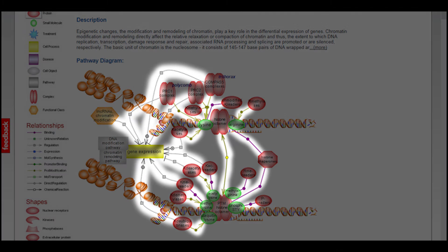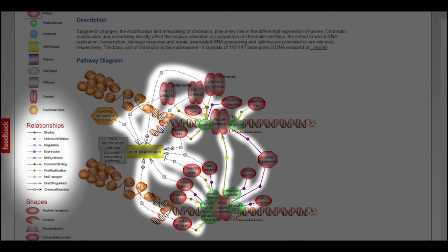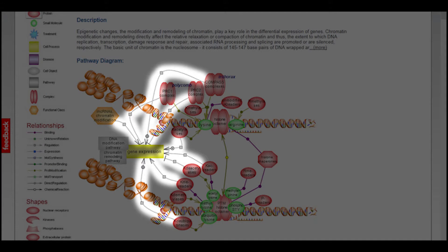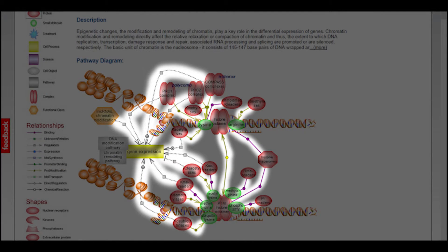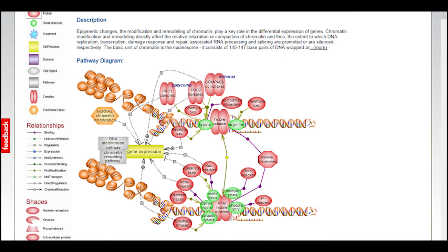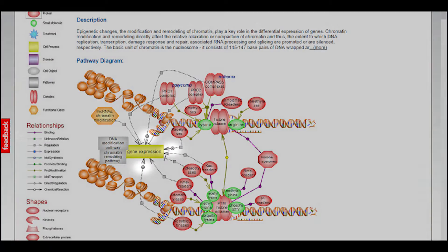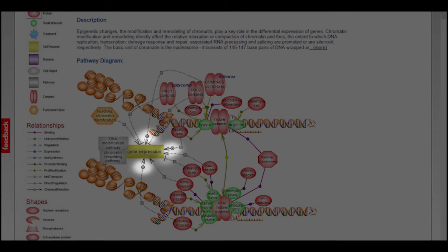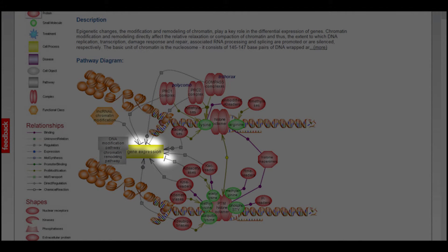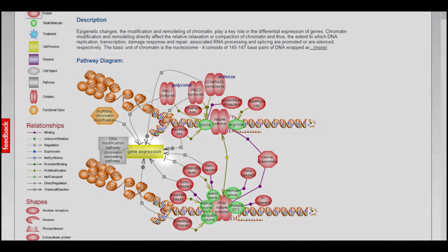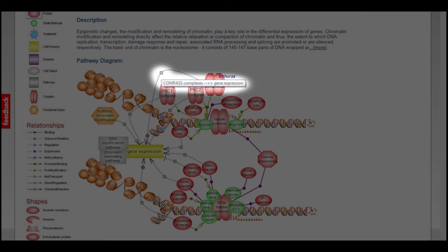The various lines between the different shapes show what relation the two entities have, as indicated by the legend on the left. In this pathway, you can see regulation, binding, and protein modification. Although not listed in the legend of the default relationships, a plus icon means up regulation, and a bar across the line denotes down regulation. Mouse over the relationship icon to see the participants and their relationship. For example, compass complexes upregulate gene expression.